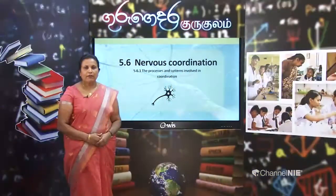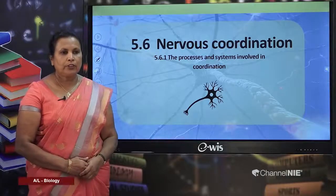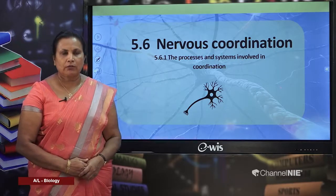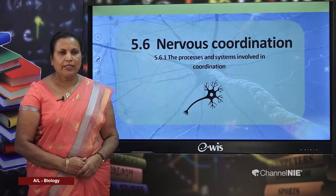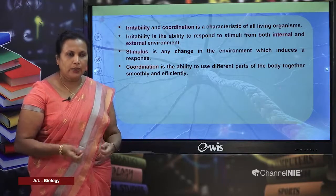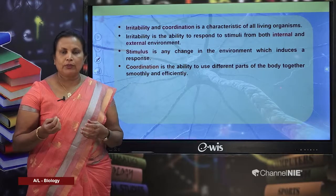Hello students, welcome to Gurugadhar educational program. This is the first lesson under Unit 5: Animal Form and Function in A-Level Biology Grade 13. Today I am going to teach you Nervous Coordination in Animal Form and Function, Unit 5, Competency 5.6. Under that, I will cover Competency Level 5.61: the processes and systems involved in coordination.